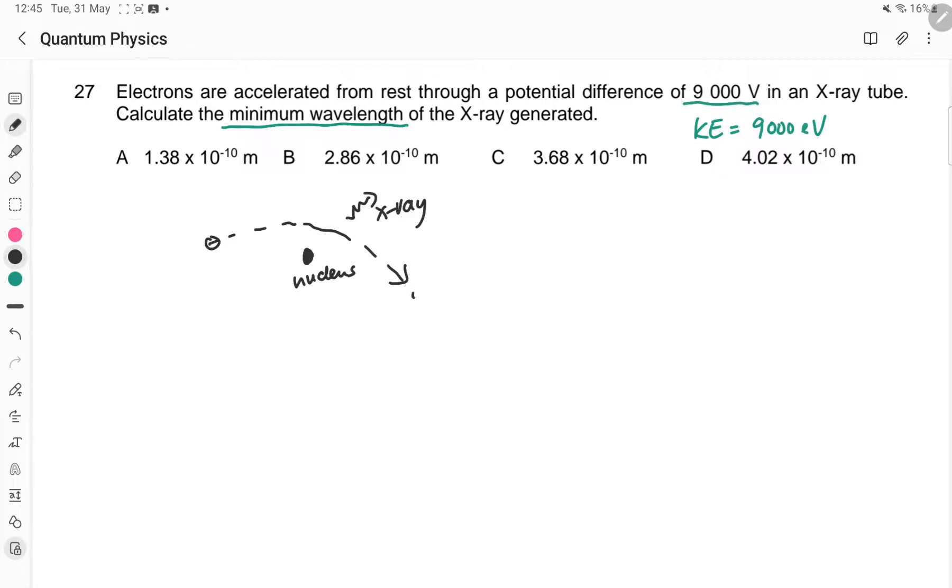So you give out X-ray photon. The loss in KE equals to the energy of the X-ray. So on the left-hand side, you'll have 9,000 eV. Convert into X-ray unit times 1.6 times 10 to the power of minus 19. Right-hand side, you'll have Hc over lambda. And just expand it out.